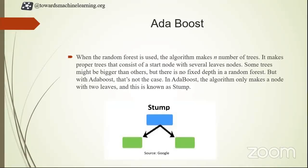Before diving into AdaBoost, it's important to understand what a stump is. You all know about decision trees and how they can be built up to any level — fourth level, eighth level, tenth level. But in AdaBoost, it makes a stump with the help of a single node and two leaves. These stumps are basically the weak learners in the AdaBoost algorithm.